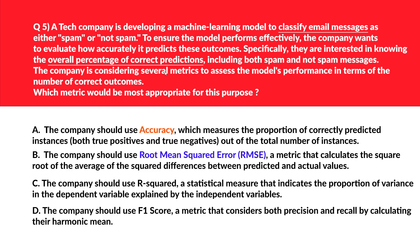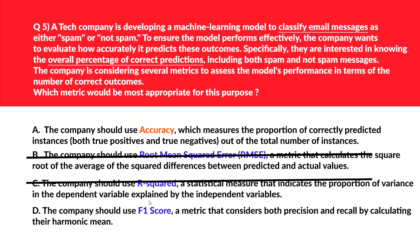Option C says the company should use R-squared — R-squared is also used for regression tasks and not for classification tasks, just like option B, so again wrong answer. Option D says use F1 score — F1 score is useful for imbalanced datasets but does not directly measure the overall percentage of correct predictions as required by the question, so we'll eliminate this as well. We are left with option A — accuracy — and it is the correct answer.